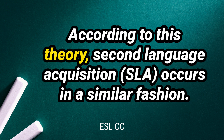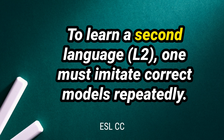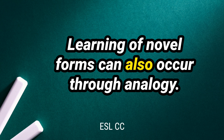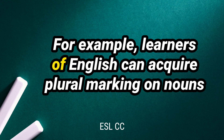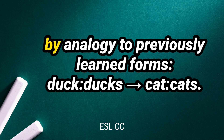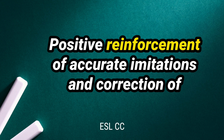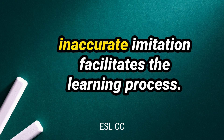According to this theory, second language acquisition occurs in a similar fashion. To learn a second language, one must imitate correct models repeatedly. Learning of novel forms can also occur through analogy. For example, learners of English can acquire plural marking on nouns by analogy to previously learned forms. Positive reinforcement of accurate imitations and correction of inaccurate imitation facilitates the learning process.